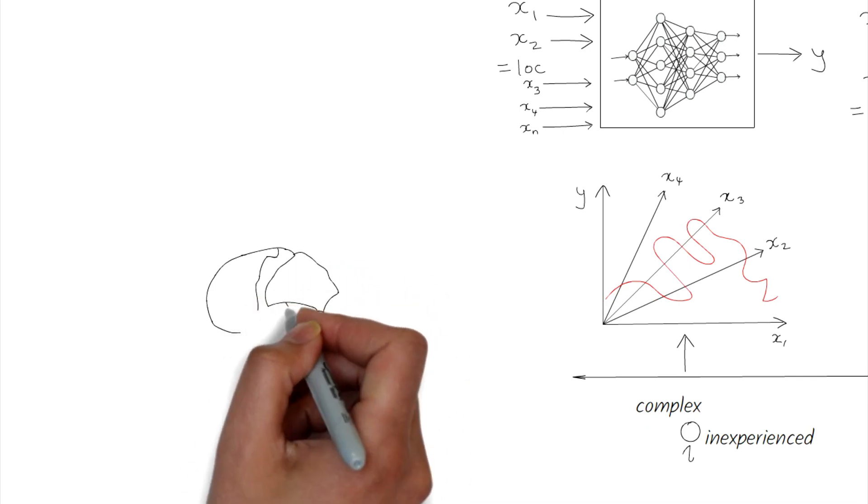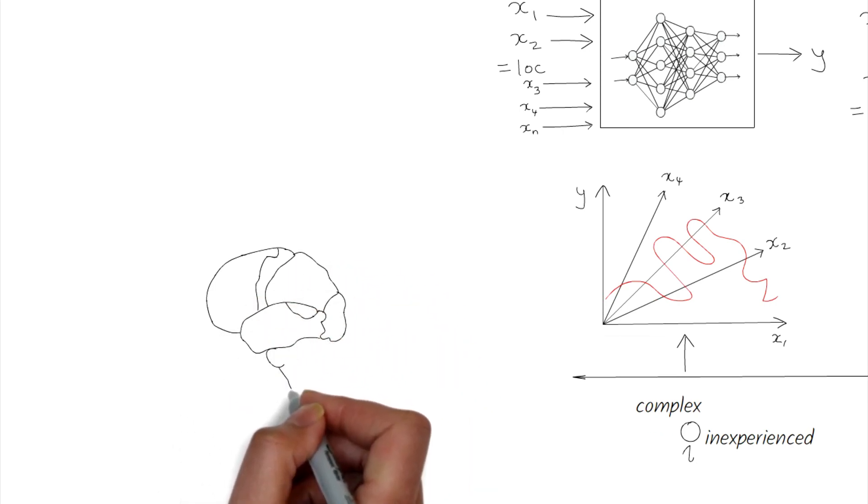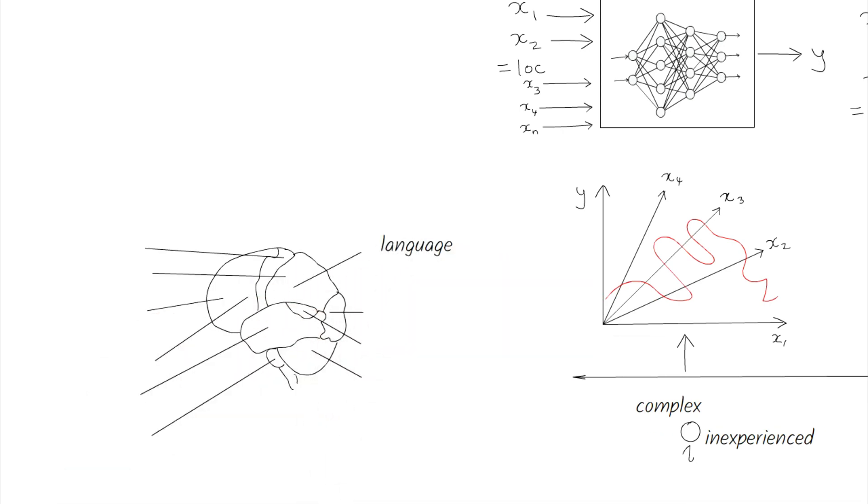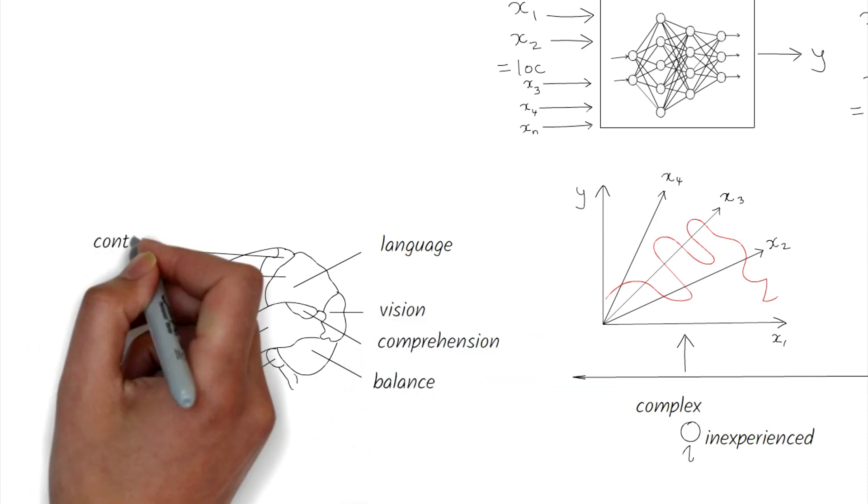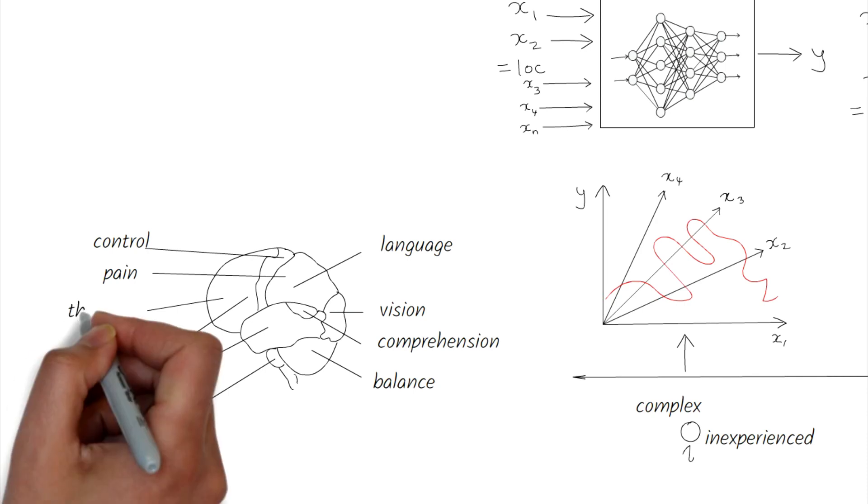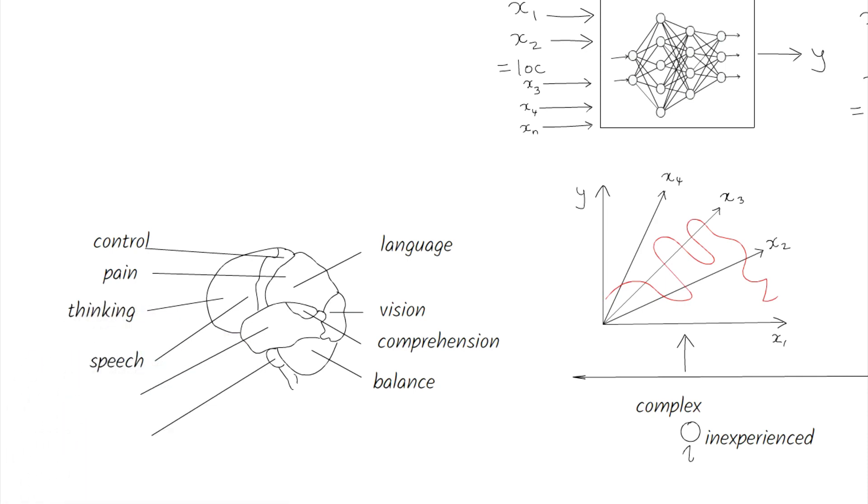So in general, it's better to have many simpler models than one huge complex model, if possible. Even the human brain, after which the deep neural network is modeled, has different regions for different functions like hearing, vision, thinking, and so on.